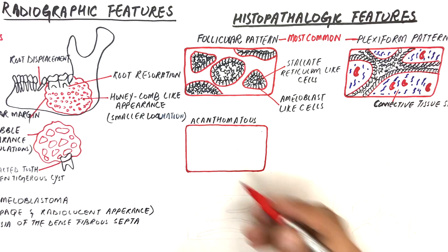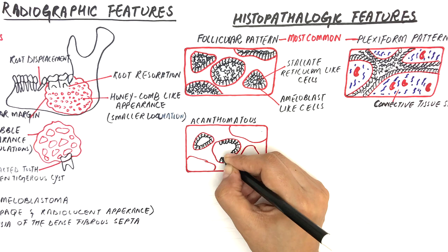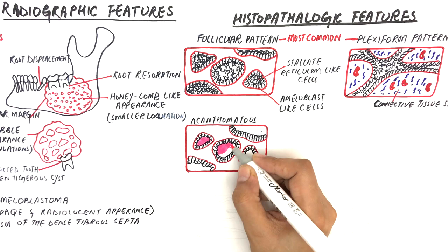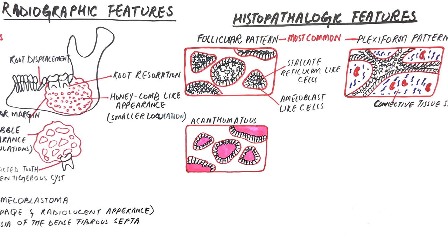The acanthomatous pattern almost resembles the follicular pattern. The difference is that in the acanthomatous type, the central part of the follicular epithelial islands undergoes squamous metaplasia. These metaplastic cells fill the central core of the epithelial islands with a keratinaceous material. This type is often confused with squamous cell carcinoma or squamous odontogenic tumor.